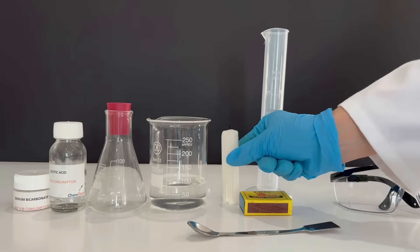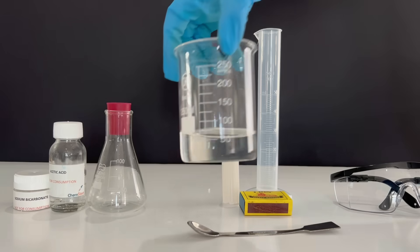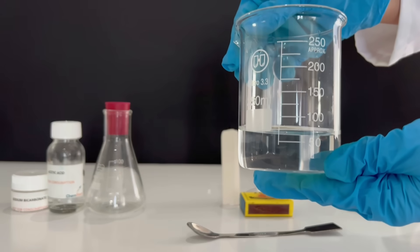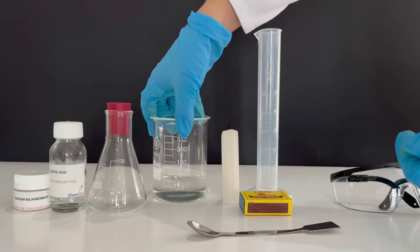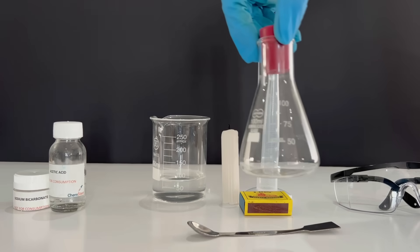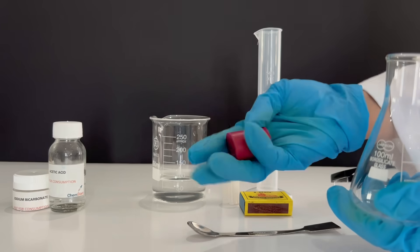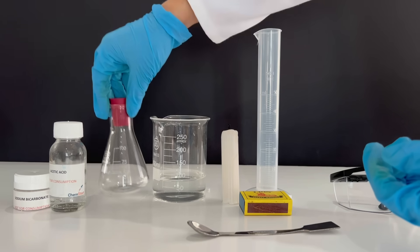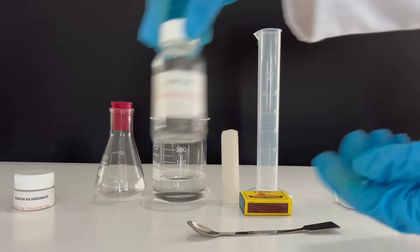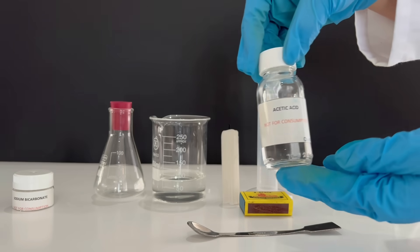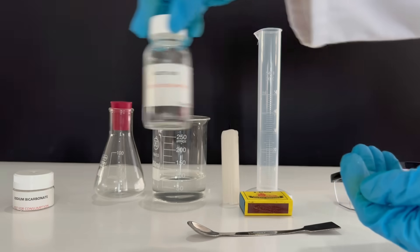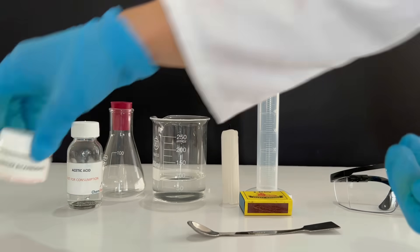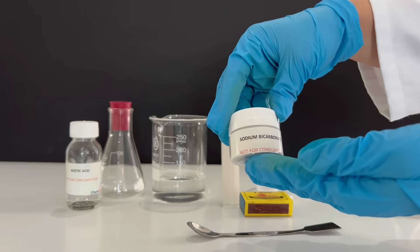You need to have a beaker with water—here we have 75 milliliters of water. You'll need an Erlenmeyer flask with a stopper, it's very important that you have the stopper. Then you need acetic acid, and sodium bicarbonate.